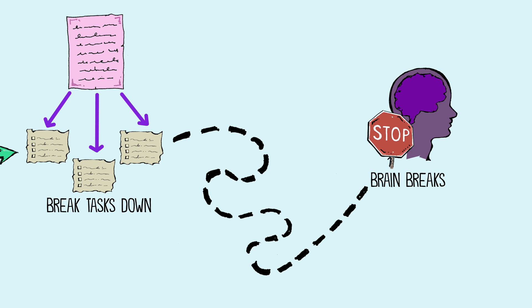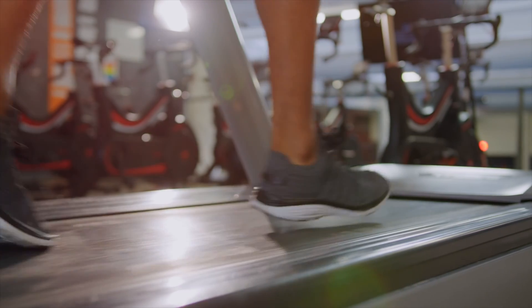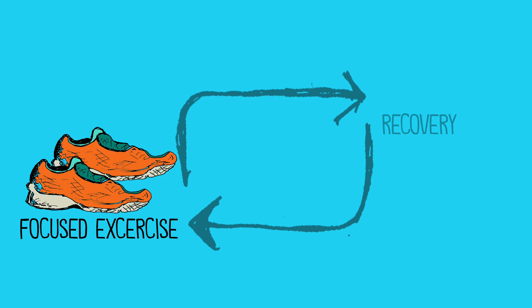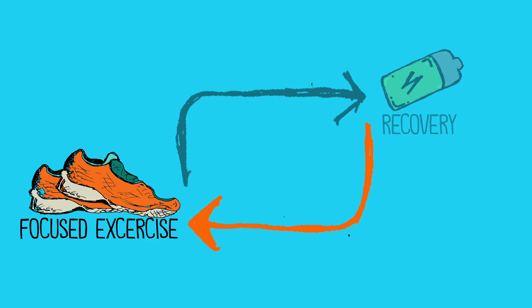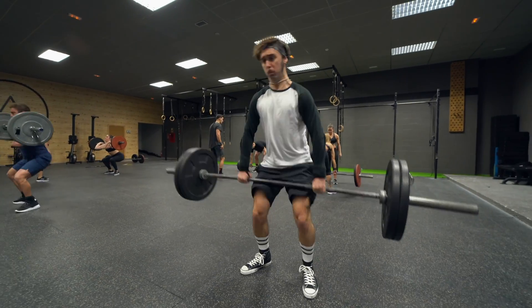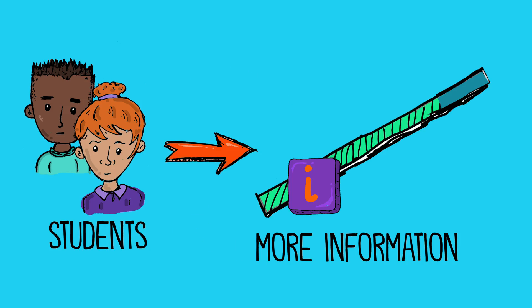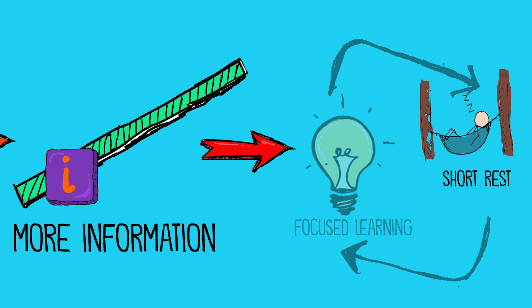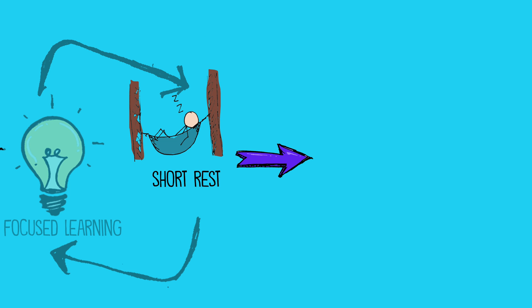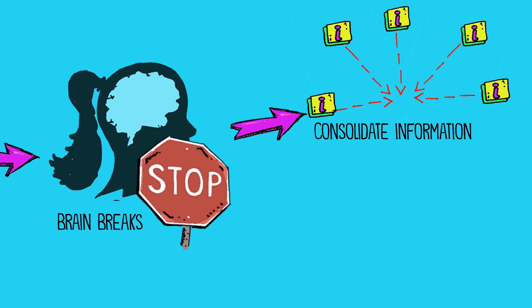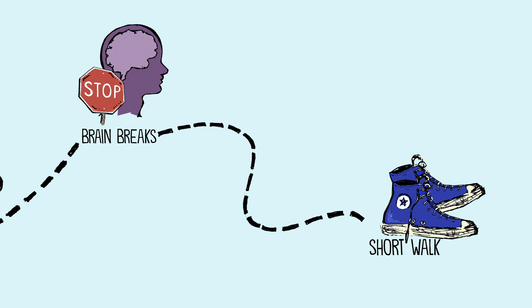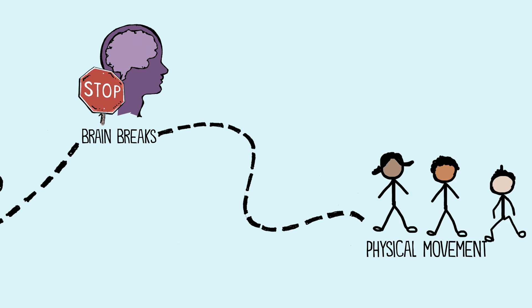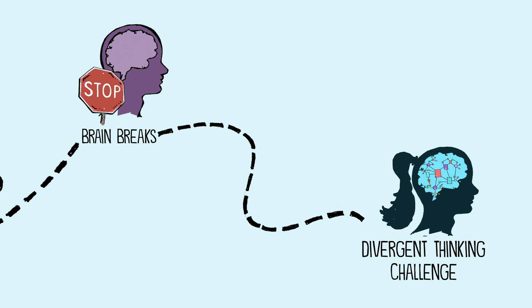Number two: engage in brain breaks. In fitness, athletes often engage in interval training — intense focused exercise followed by a period of short rest, then focused exercise again. Similarly, students will retain more information if they have focused learning followed by short bursts of rest called brain breaks, where the brain consolidates information and makes connections between ideas. Brain breaks might include a short walk, a fun game, a coordinated physical movement, or a quick divergent thinking challenge.